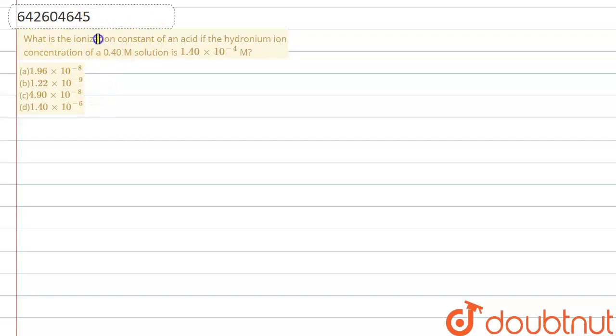Let me explain it to you. What is the ionization constant of an acid if the hydronium ion concentration of a 0.40 molar solution is 1.40 × 10^-4?